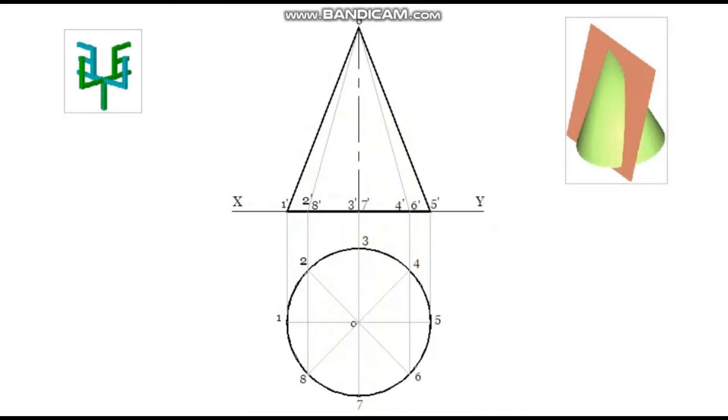In this case, the sectional plane is perpendicular to VP and parallel to the generator of the cone. So, in the elevation, a line parallel to the side of the cone must be drawn as cutting plane. The parallelism is 12 mm.